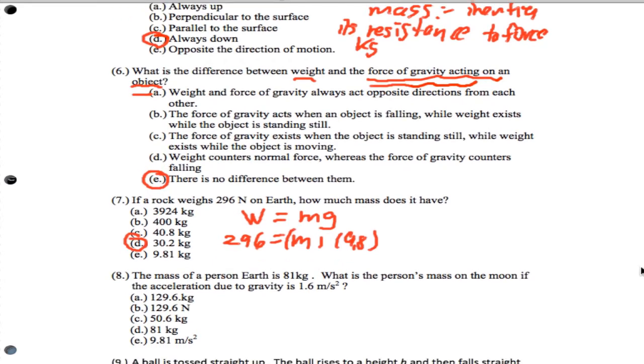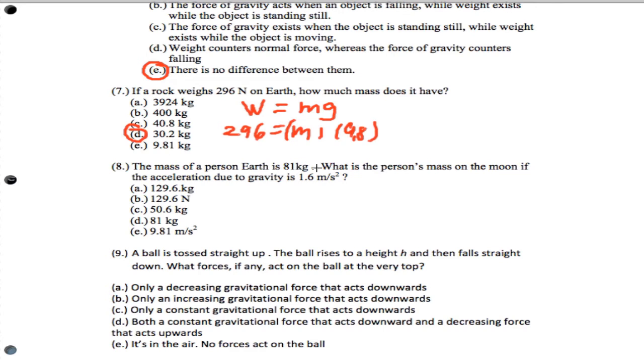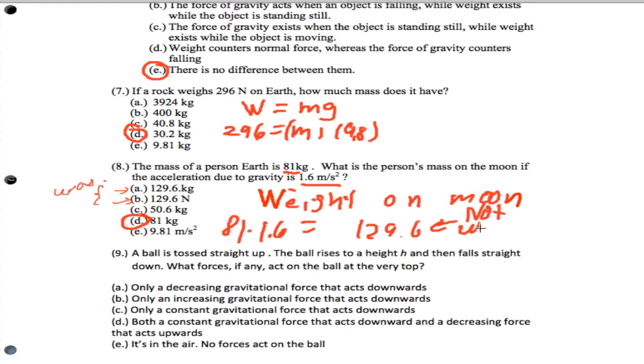Number eight. Mass of a person on Earth is 81 kilograms. What is the person's mass on the moon if the acceleration of gravity is 1.6? This is a trick question. The answer is D, 81 kilograms. If I asked you for the weight on the moon, that would be a different question. That would be 81 times 1.6. And you notice, if you actually do the math here, we actually give you that as an option, as one of the choices, with even wrong units. So those are both wrong, because I didn't ask you for the weight. I asked you for the mass. Not what they asked. So please be careful.